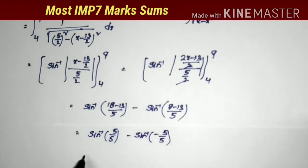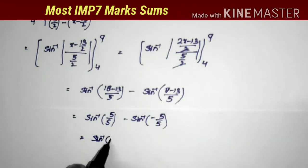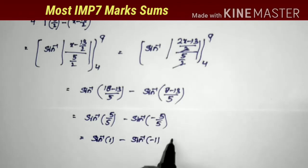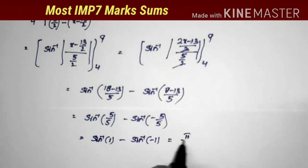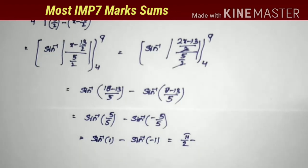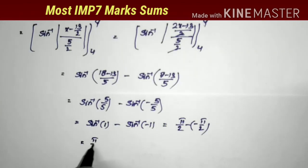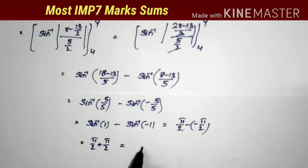So this becomes sin inverse of 5/5 minus sin inverse of minus 5/5, which equals sin inverse of 1 minus sin inverse of minus 1. Sin inverse of 1 equals π/2, and sin inverse of minus 1 equals minus π/2. Therefore: π/2 minus (minus π/2) = π/2 plus π/2 = π.